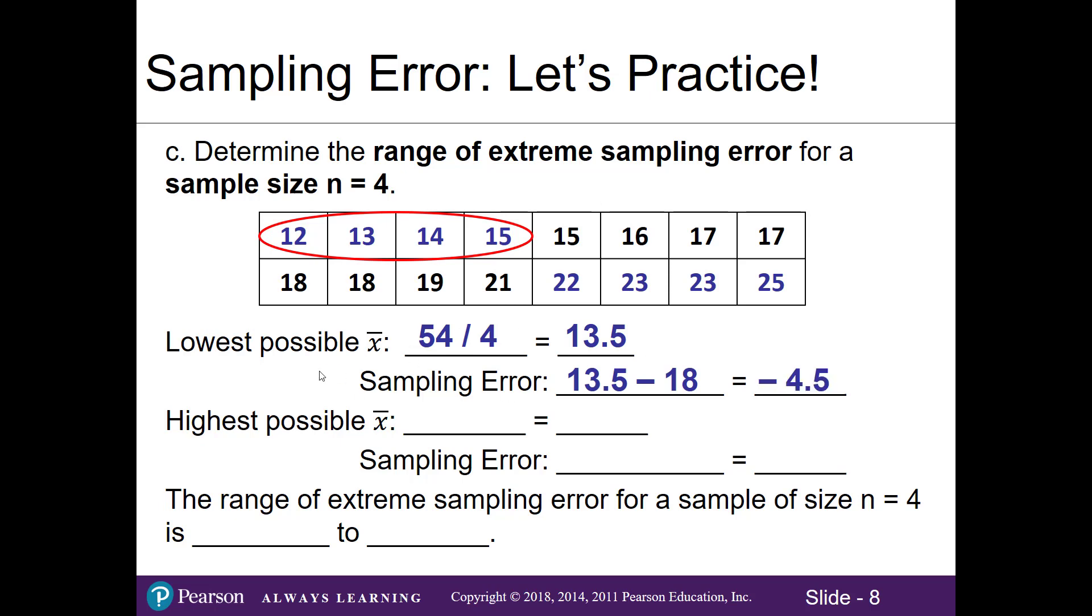In other words, imagine if by luck of the draw I pull a sample of 4 and they happen to be the smallest numbers in our population. That's our lowest possible sample mean we just calculated, and here's the sampling error associated with it.